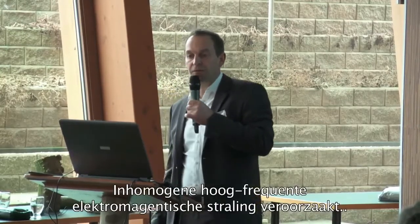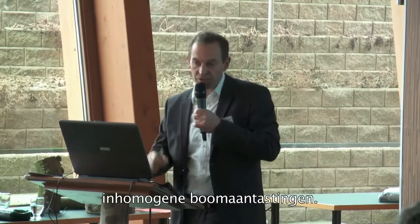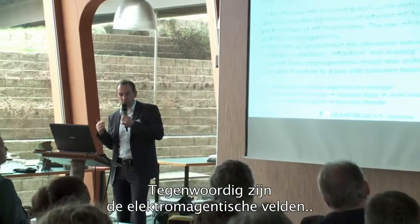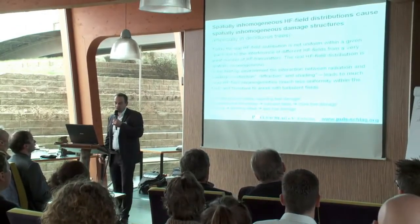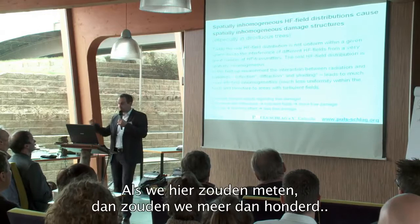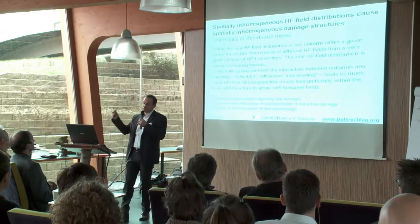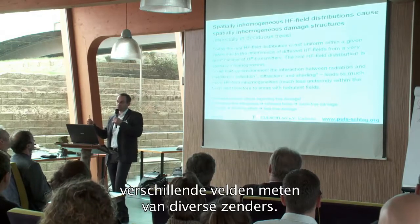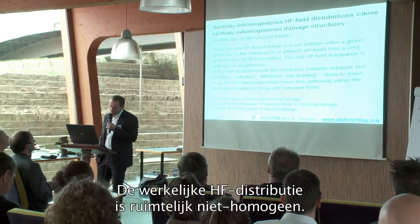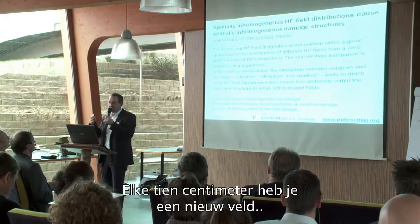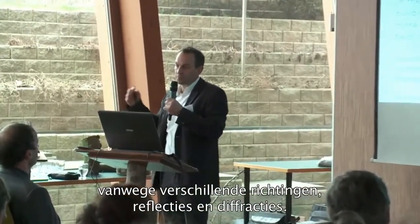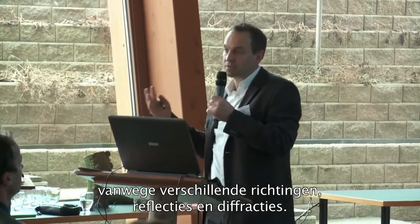Spatially inhomogeneous high-frequency field distributions cause spatially inhomogeneous tree damage. The real high-frequency field distribution is not uniform in a given space due to the interference of different high-frequency fields from a very great number of HF transmitters. If I were to make a measurement here, I would surely measure more than 100 high-frequency fields from different transmitters — and they superpose. The real high-frequency field distribution is spatially inhomogeneous.